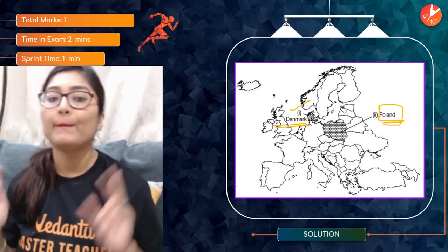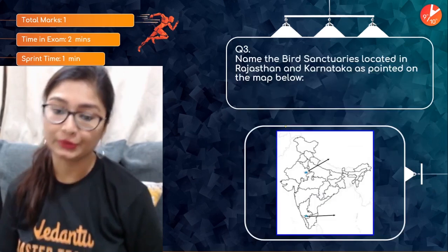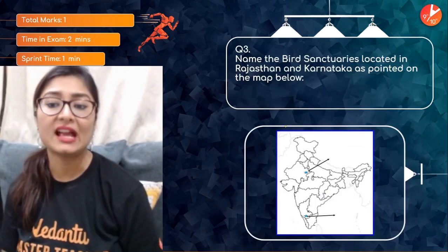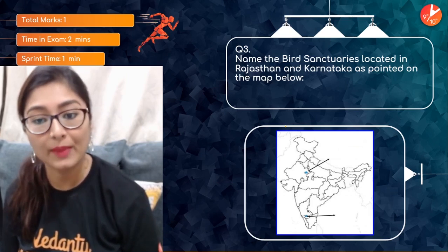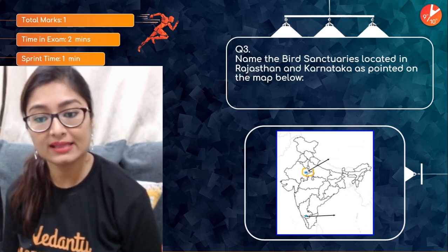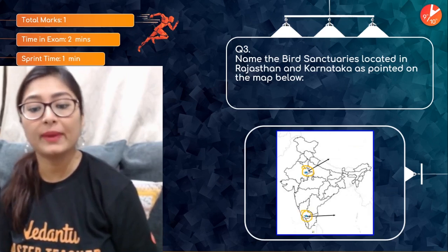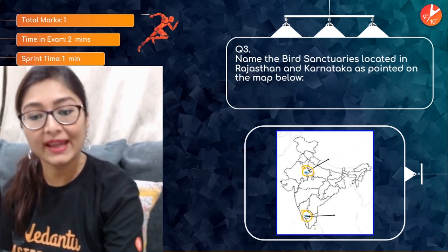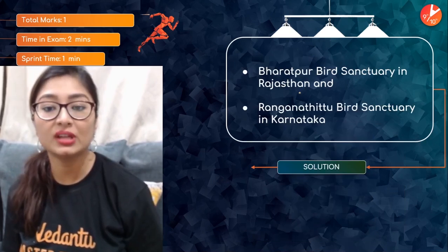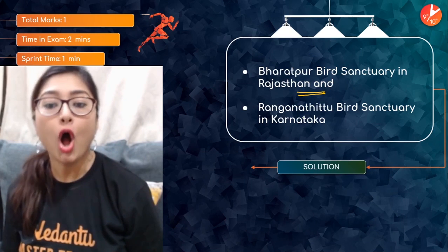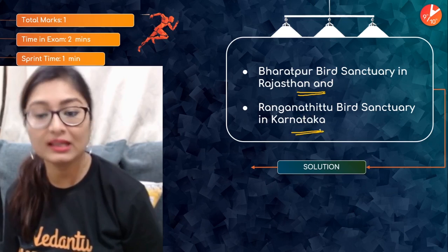Question 3: name the bird sanctuaries located in Rajasthan and Karnataka as pointed on the map. This is straightforward — Bharatpur Bird Sanctuary is in Rajasthan, and Ranganathittu Bird Sanctuary is in Karnataka. Keep these in mind as they are commonly asked.